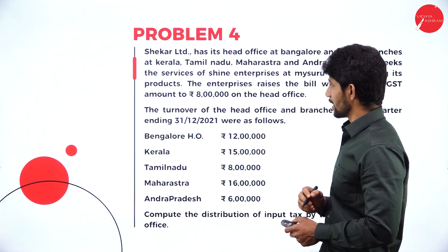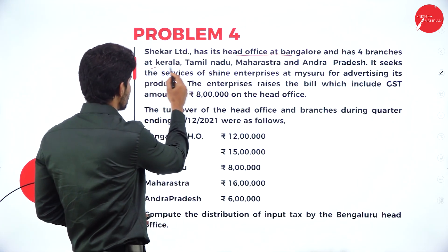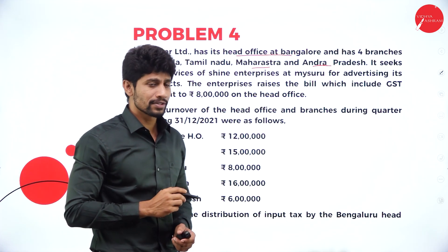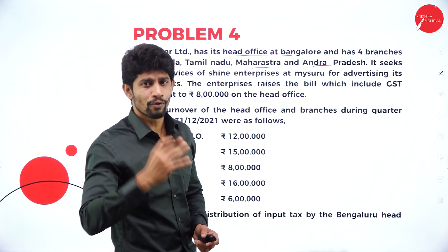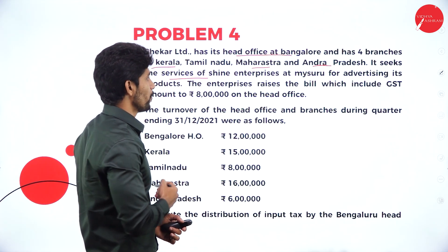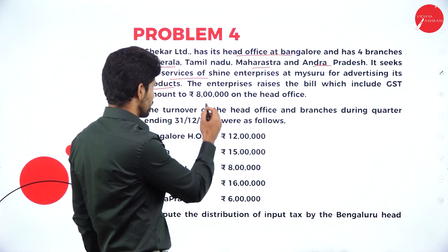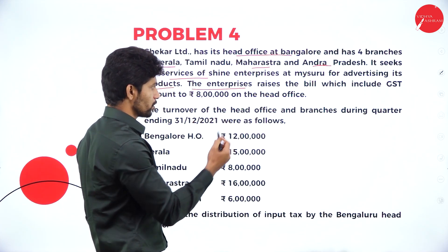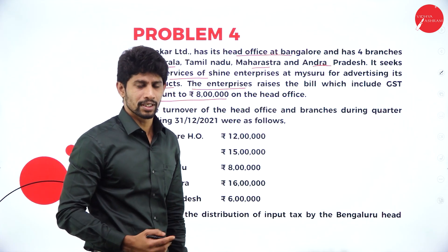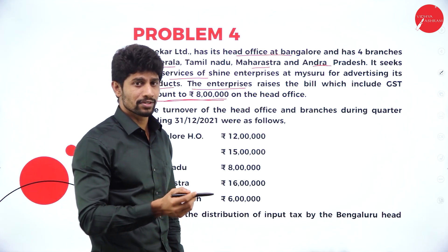Problem number four: Shaker Limited has its head office at Bangalore and has four branches at Kerala, Tamil Nadu, Maharashtra, and Andhra Pradesh. Shaker Limited is situated in Bangalore and also has four branches in different places. It seeks the services of Shine Enterprises at Mysore for advertising its product. For that, the enterprise raises a bill which includes a GST amount of rupees 8 lakh on the head office — they raised the bill for advertisement with 8 lakh rupees of GST included.